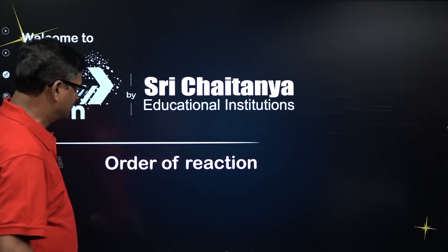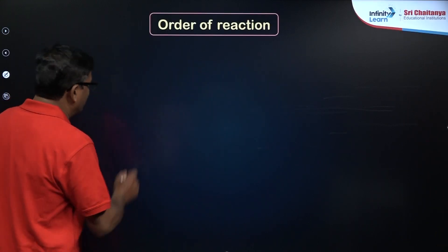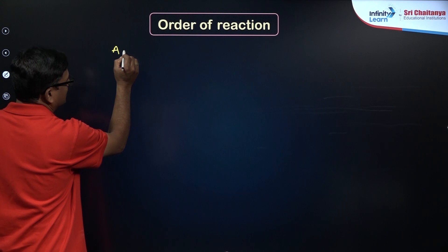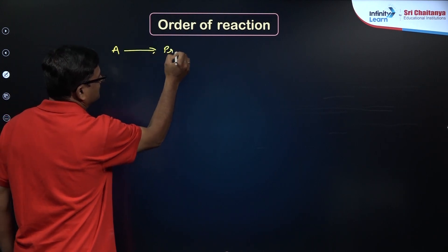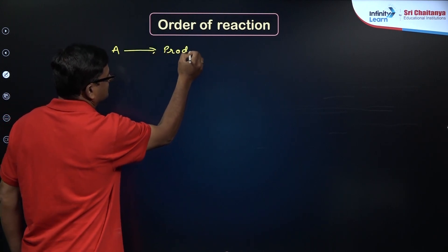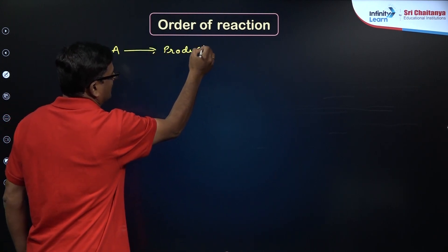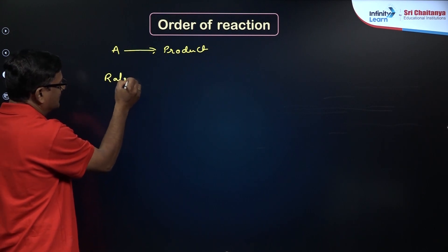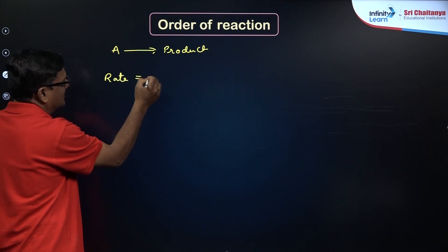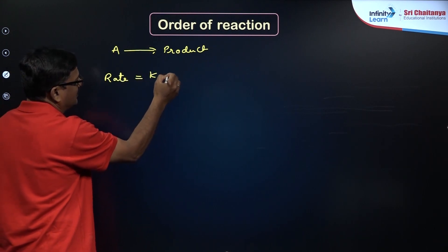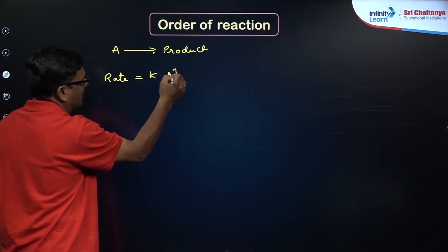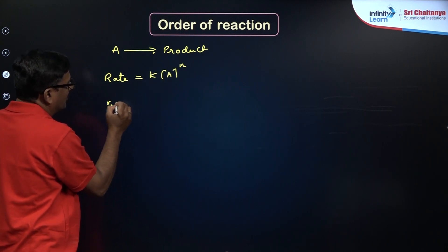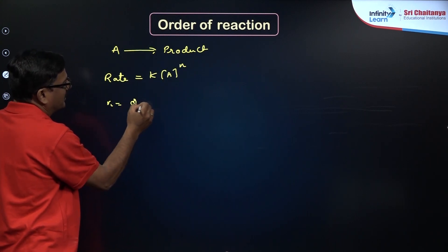For a chemical reaction, let us say A is giving rise to the product, and its rate law is given as k[A] to the power n, where n is the order of a reaction.